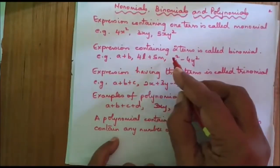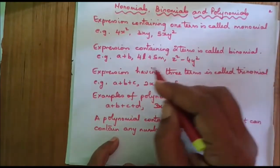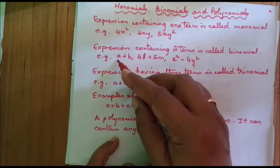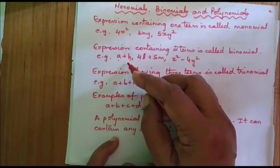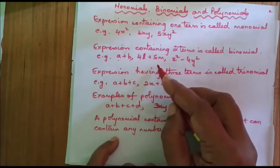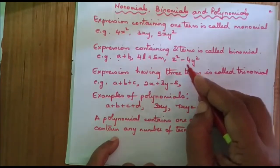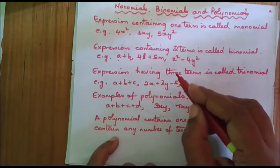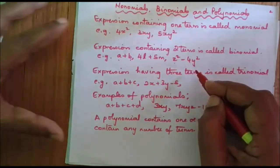If an expression contains two terms, it is called a binomial. For example, a plus b — there are two terms: a is one term and b is another term, so this is a binomial. Other examples: 4l plus 5m, and z squared minus 4y squared, where the two terms are z squared and 4y squared. So these are examples of binomials.